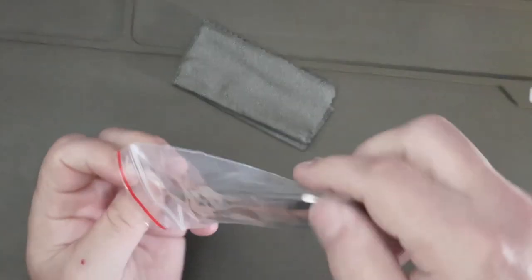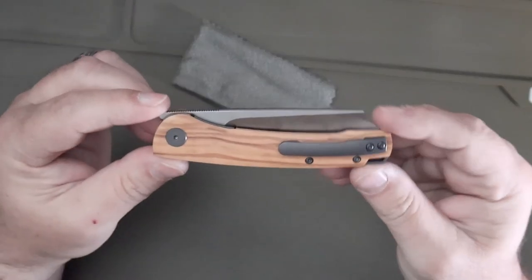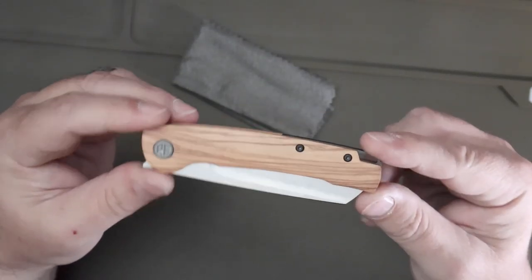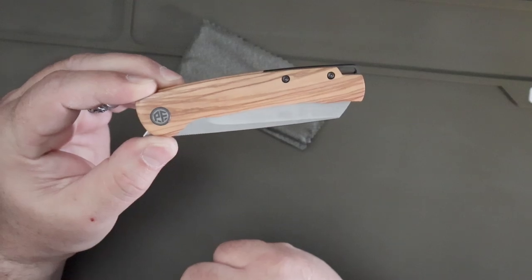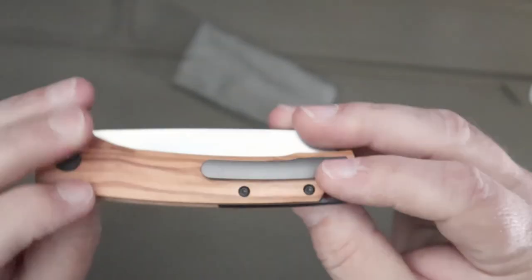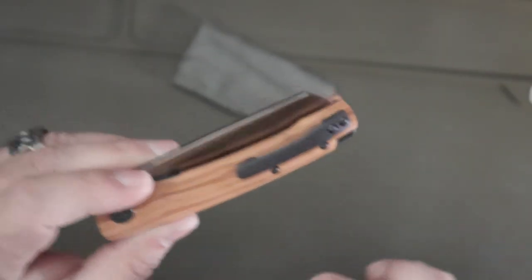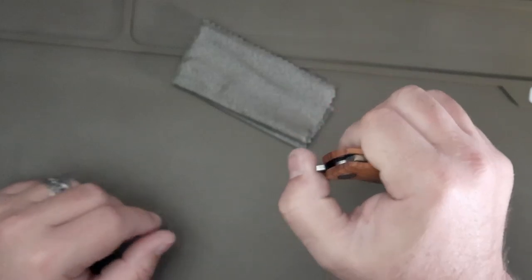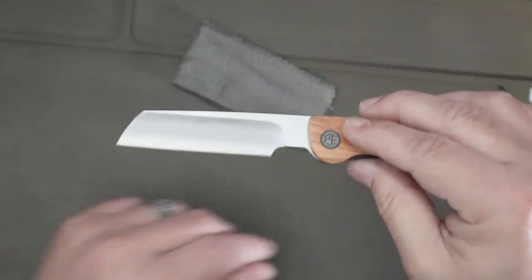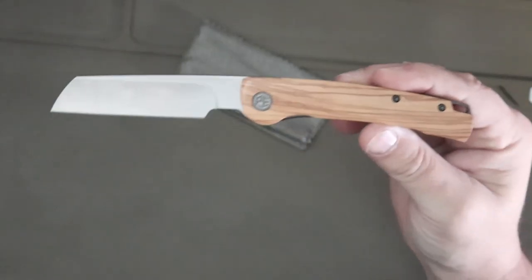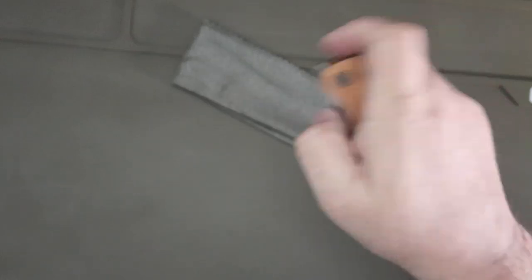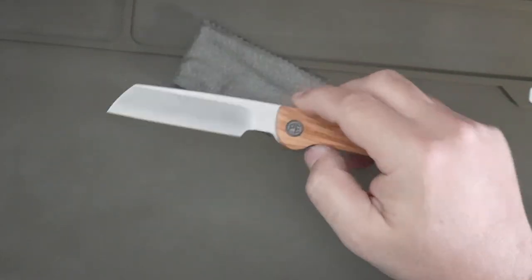This is the Petrified Fish Scholar, it has olive wood handles, it has a lanyard hole here, titanium clip. It is a front flipper, never had a front flipper before, not real sure if I can do this or not. First try! Let's do that one more time. That is nice action.